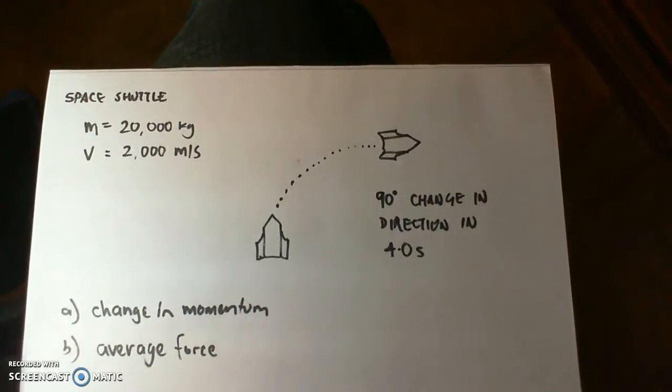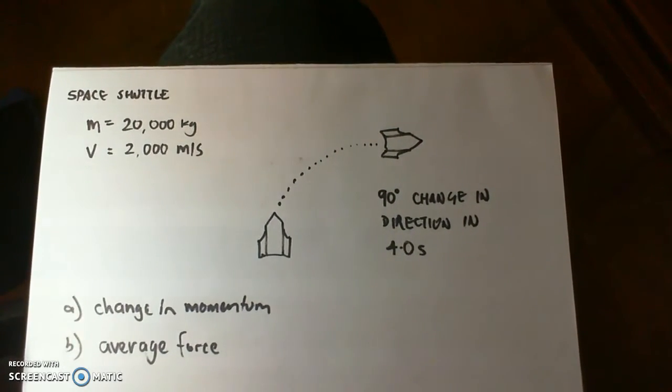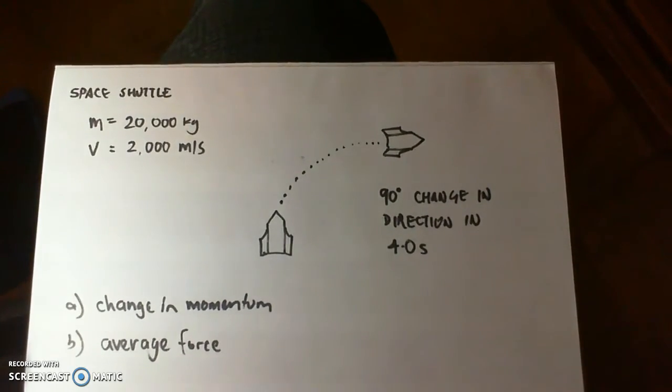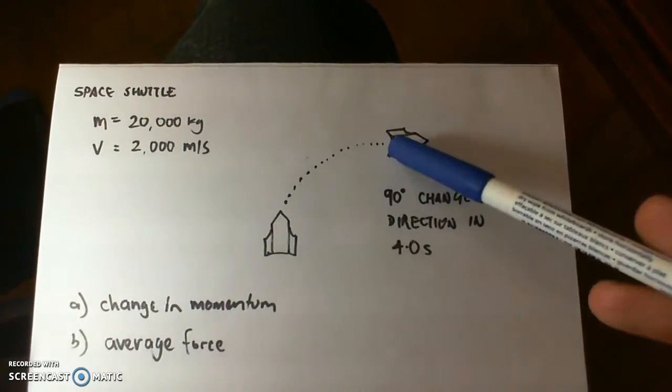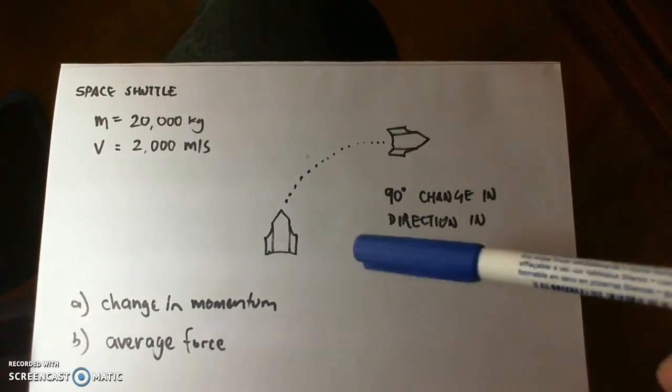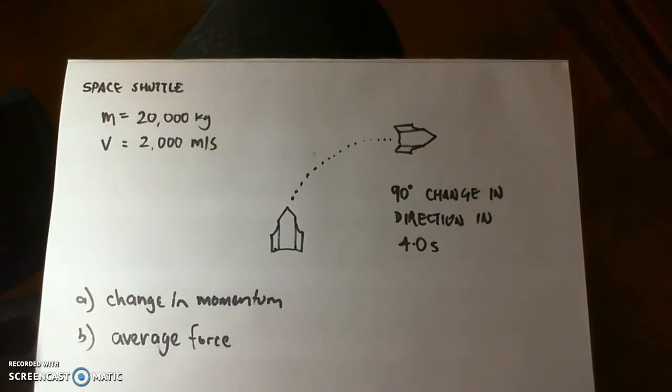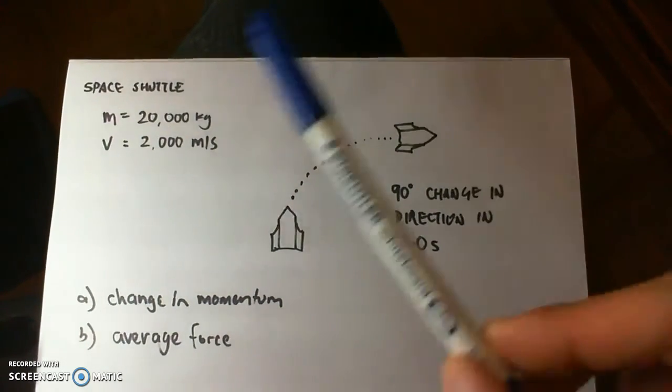Let's have a look at a question involving the application component of this topic, which is space shuttles. We've got a space shuttle that changes direction when it's traveling through space due to a thrust that's applied so it can change direction.